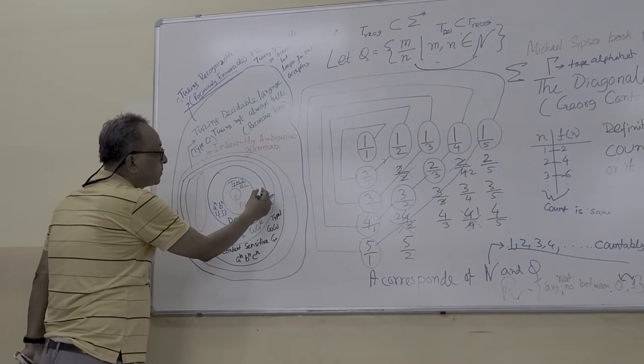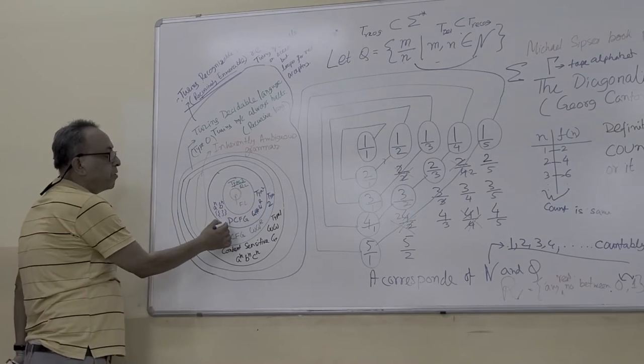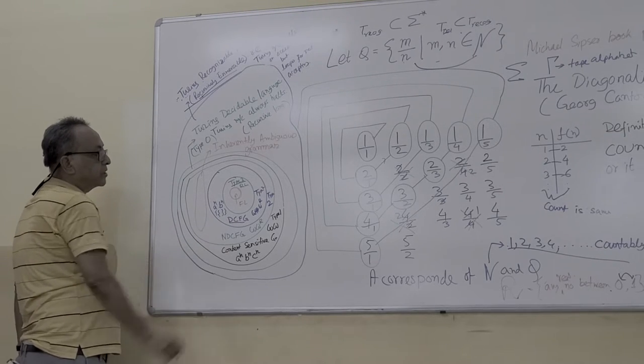Then, there are two kinds of Type 2 language. One is deterministic context-free grammar. Another is non-deterministic context-free grammar.